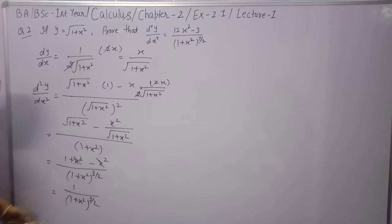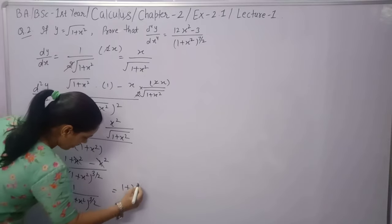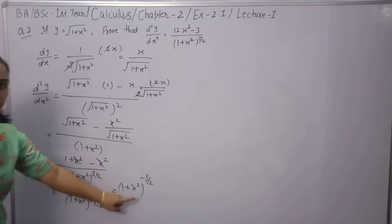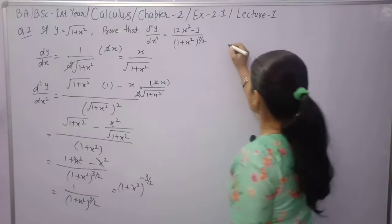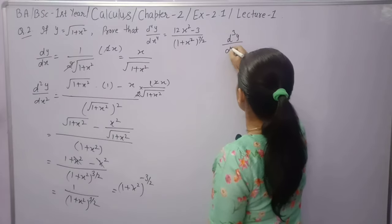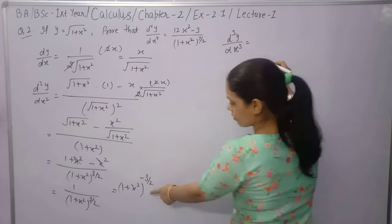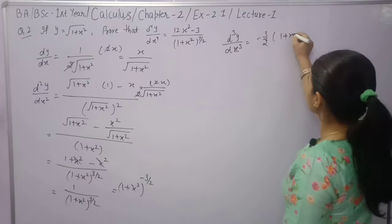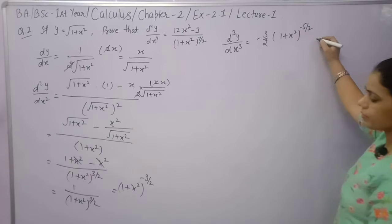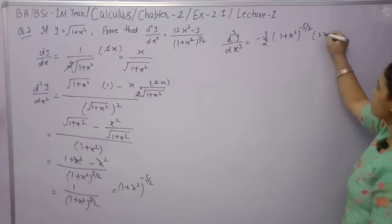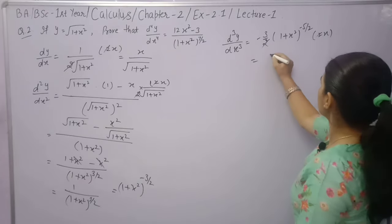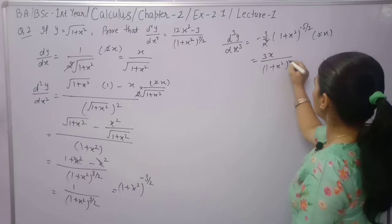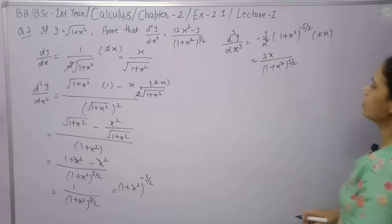This is the answer for the second derivative. Now finding the third derivative d³y/dx³: write (1+x²)^(-3/2), bring down the power -3/2, giving (1+x²)^(-5/2), then multiply by the base derivative 2x. The 2's cancel, giving -3x/(1+x²)^(5/2) — this is the same form as question 1.